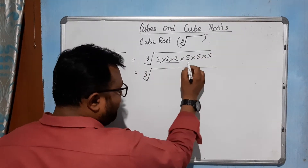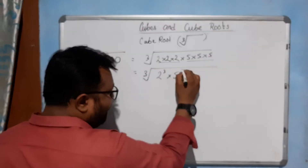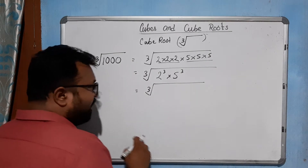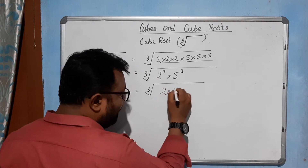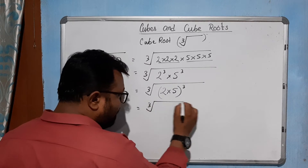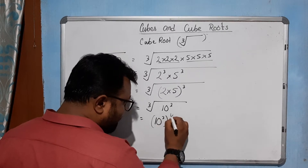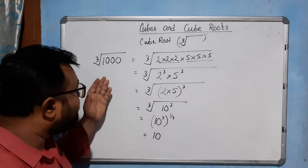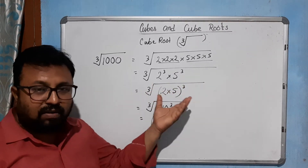These are triplets, so we can write in cube form: 2 cubed into 5 cubed. By the law of exponents, the two numbers under the same power can be written as (2 × 5) to the power cube, which is 10 to the power 1/3. Ultimately that gives us 10, so the cube root of 1000 is 10, found by using the law of exponents.